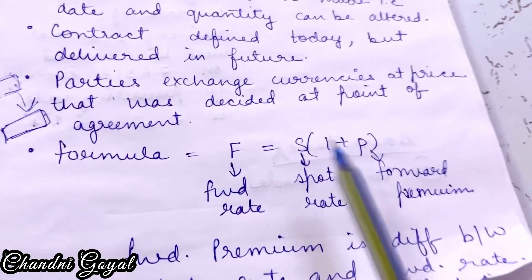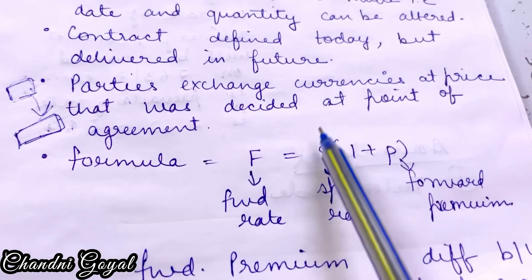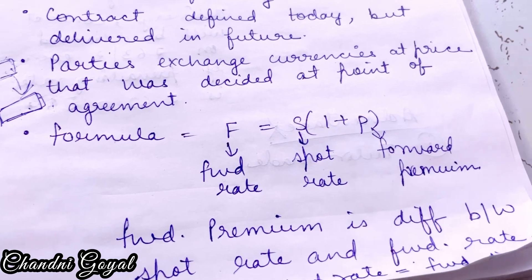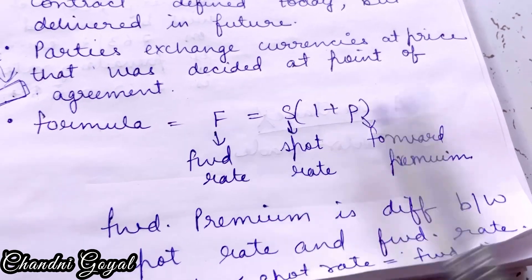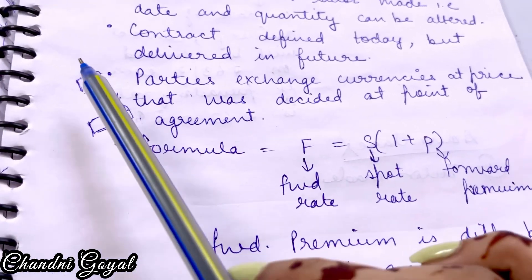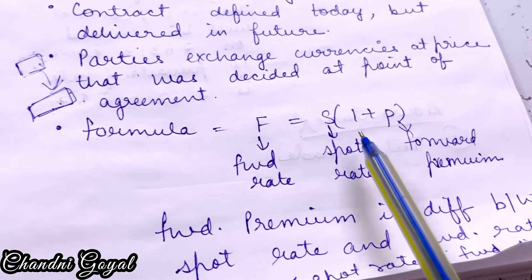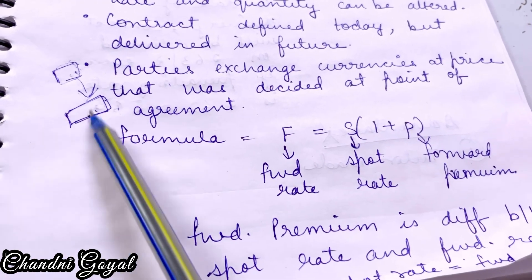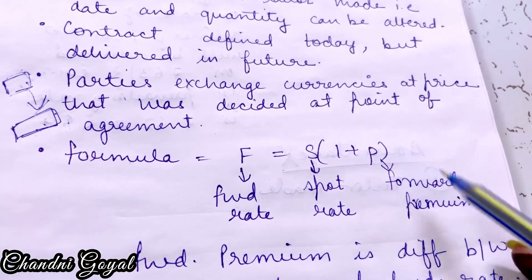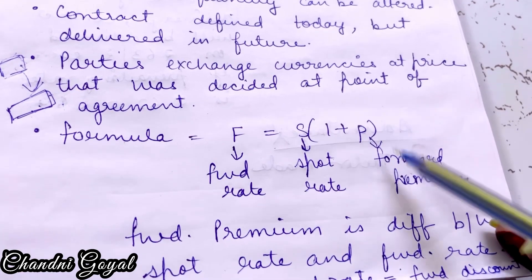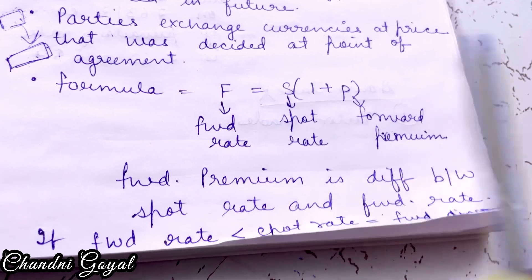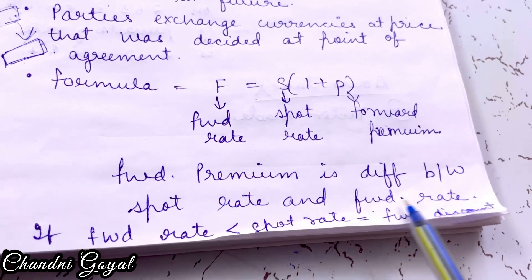The formula is: Forward Rate = Spot Rate × (1 + p). Here, F is the forward rate — the price you have set. Spot rate is the current price of any asset. P denotes forward premium — it is the difference between the spot rate and the forward rate.